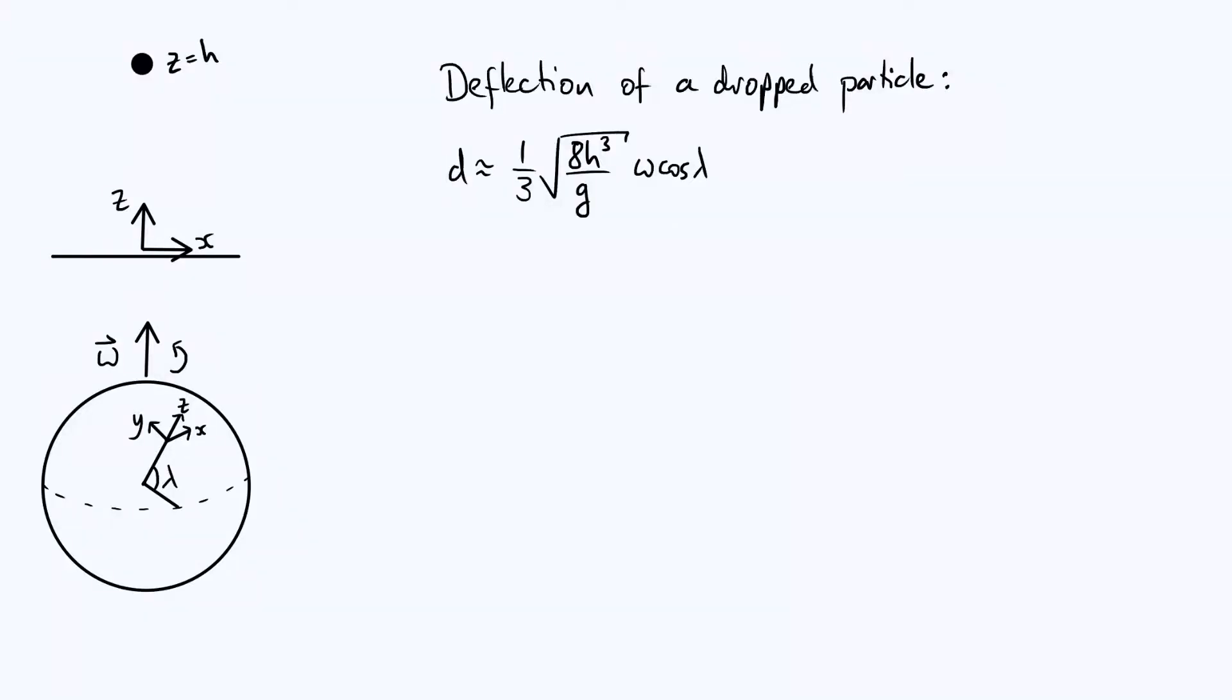Hi everyone, in my previous video I derived an expression for the eastward deflection of a dropped particle on earth due to the Coriolis force, and what I want to do in this video is put some actual numbers into the equation that we derived and see how high up do you have to go before this effect actually becomes measurable or significant.